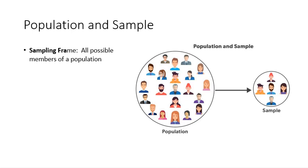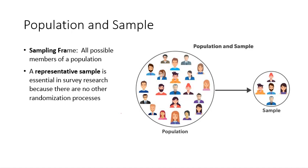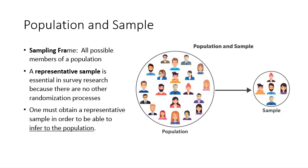If you have done your job well, you'll have a representative sample. The people in this smaller group should be representative of all the characteristics of the population. And if that's done well, then we will be able to generalize back to the population.